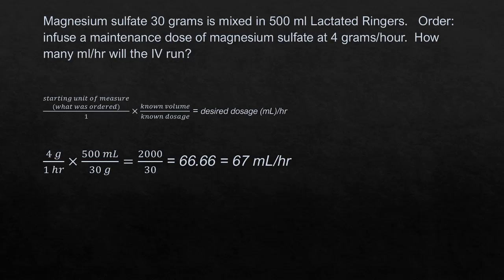In Dimensional Analysis, we start with the units of measure, or what was ordered. In this case, we have 4 grams an hour for our order. We want to make sure that we can convert it to what the answer is asking for — in this case, milliliters per hour. In our supply dose, we already have grams and milliliters, so we'll be able to cancel out the grams without adding an extra conversion. We start with the 4 grams an hour, then add our known volume and known dosage from the problem. Since we work across diagonally, we put grams on the bottom so we can cross out that unit and we're left with milliliters an hour.